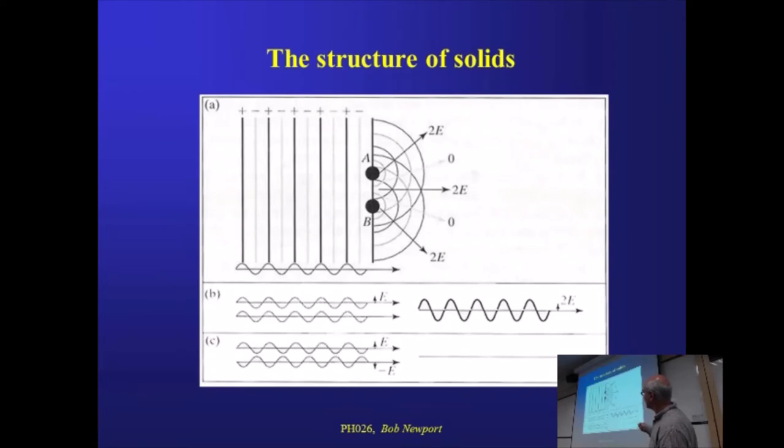So just imagine this is just two atoms scattering our X-rays. We're going to have certain directions where wave peaks line up, so there and there, for instance. There, there, and there. Wave peaks, wave troughs. And other directions, like there, where we have a wave peak and a wave trough coinciding with one another. So we're going to have high intensity, nothing, high intensity, nothing, high intensity.